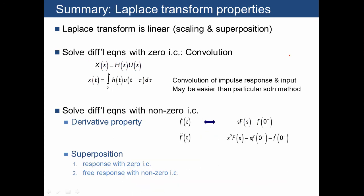In summary, we looked at the Laplace transform linearity property, which is useful for going both forwards and backwards in the transform tables. We also showed how to solve a differential equation with zero initial conditions by multiplying the transfer function against the input, which is equivalent in the time domain to the convolution integral — a useful method for solving equations with arbitrary inputs. Finally, we looked at the derivative property for solving differential equations with non-zero initial conditions, and showed that combining both properties lets you find the full response as the sum of the step response and the free response.